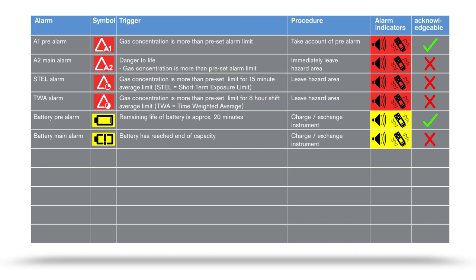If the instrument has an error present, an X symbol appears in the display. Once the alarm has been acknowledged, this symbol remains in the status line. Details of the error are shown in the info menu. Resume your work with a different device and hand the faulty device to the service department.